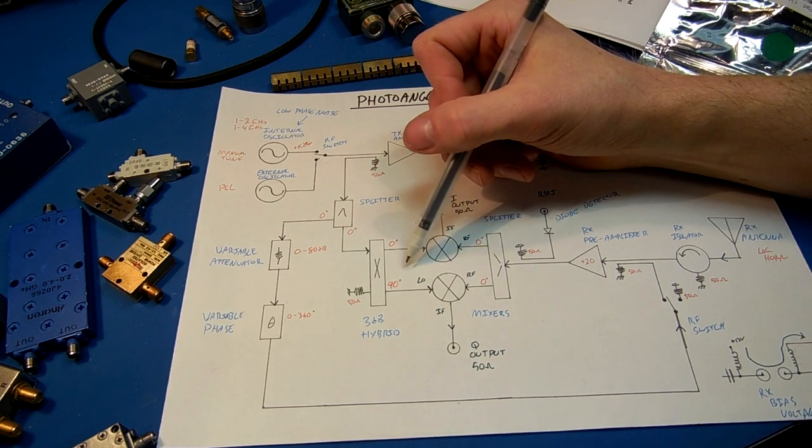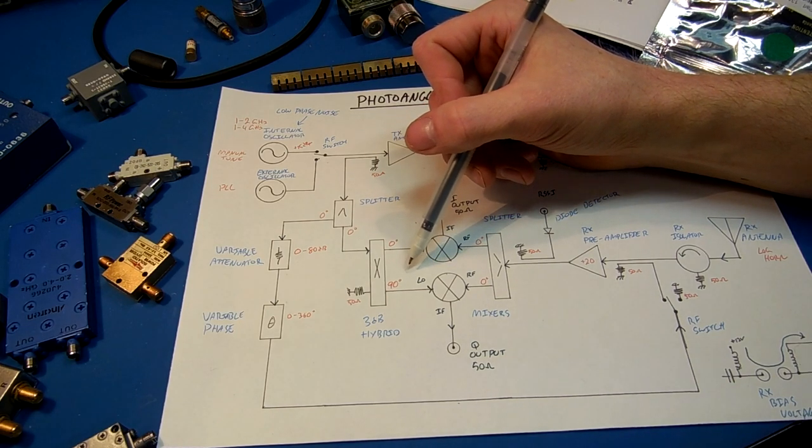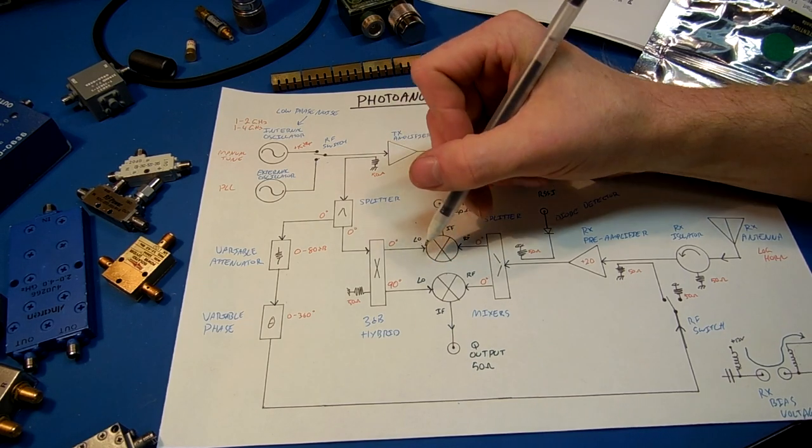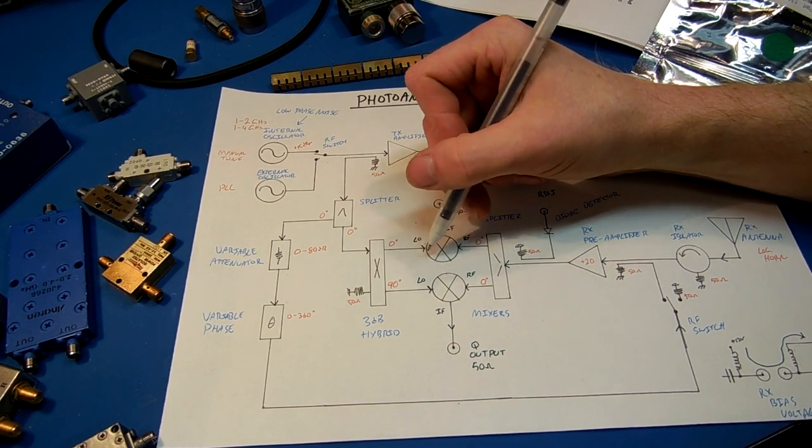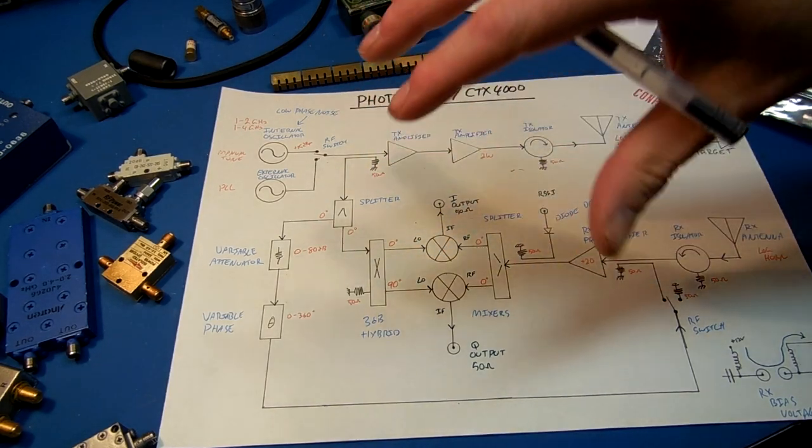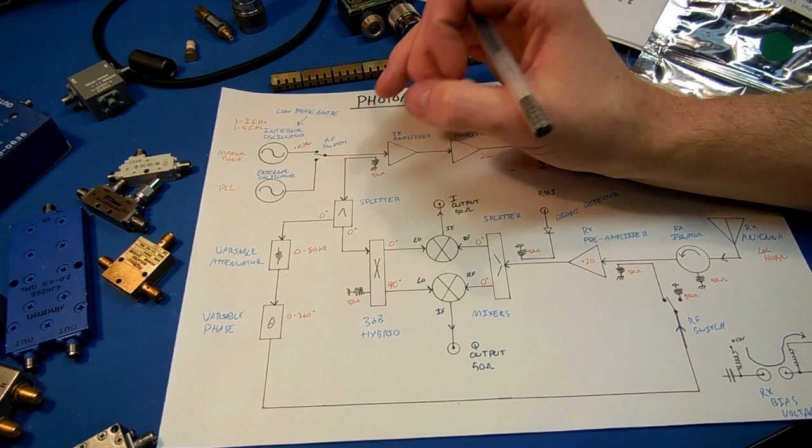What this does is, we essentially create a stereo signal. That allows us to analyze our returned, received RF signal in both amplitude, frequency, and phase. And by determining each of those three components, we can demodulate just about anything.